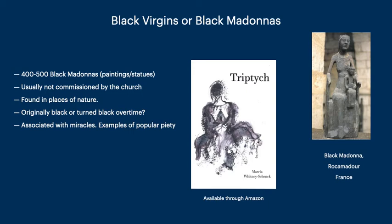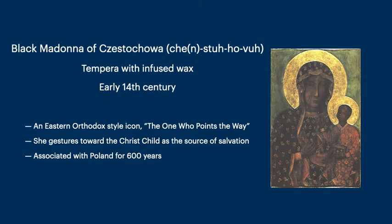The novel tells the story of the woman who actually created this Black Madonna. So both as an artist and writer, when one wants to express something related to this issue, it isn't just having that desire — it's trying to figure out the format that would work to communicate one's ideas. In this case, it took me about 12 years to figure out the links between the women and their association with the Black Madonna. And of course, we have the Black Madonna of Częstochowa. This is an Eastern Orthodox style icon — it's the one who points the way. She gestures toward the Christ child as the source of salvation, and this image has been associated with Poland for 600 years.